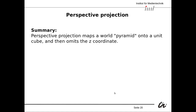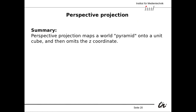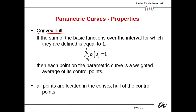In summary, the perspective projection maps a world pyramid into a unit cube and then simply omits the Z coordinate. That's it for this video. Next time, more on parametric curves. Thank you for your attention and see you in the next video.